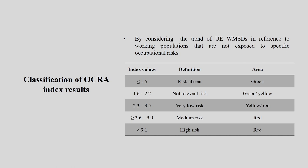The OCRA index has a classification based on the trend of upper extremity work-related musculoskeletal disorder in the working population. If the index is less than or equal to 1.5, the risk is absent (green). From 1.6 to 2.2 the risk is not relevant (green or yellow), and it increases progressively. If it is more than 9.1, it is very high risk.